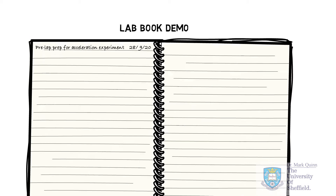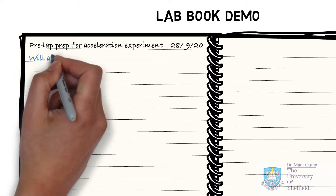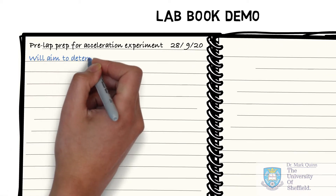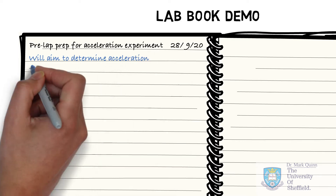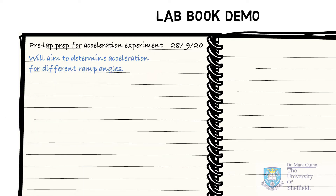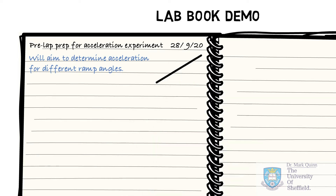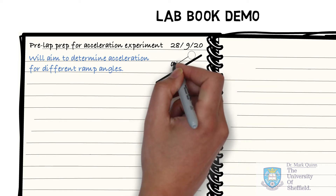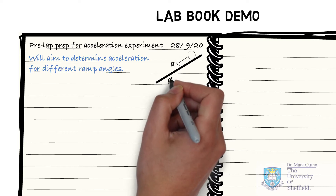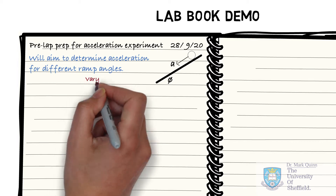Before any experiment can happen, you need to prepare. To get started, state the general aim of the experiment. In this example, we are planning to investigate acceleration by rolling a ball down a ramp. Begin to consider a simple picture of how you would achieve this aim. What are the key measurements, for example?